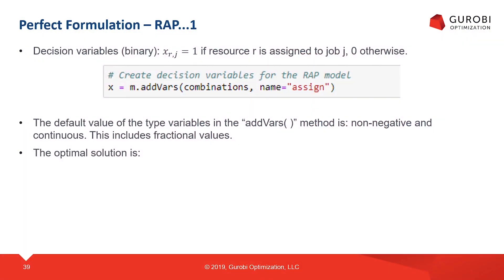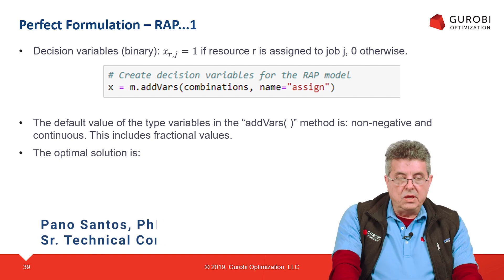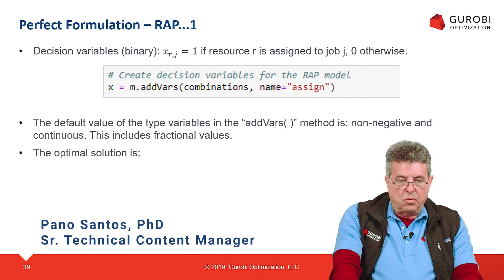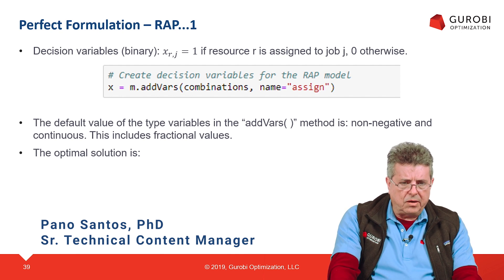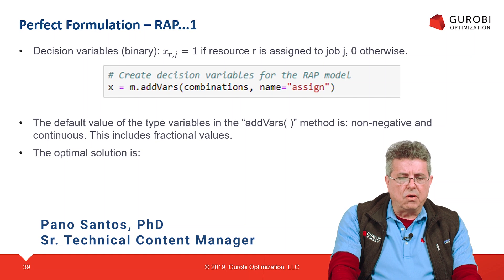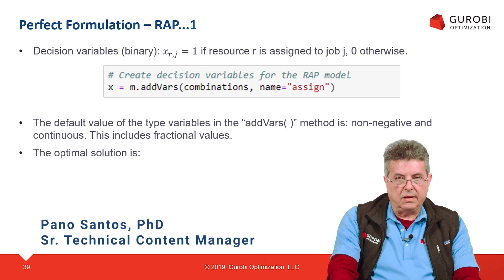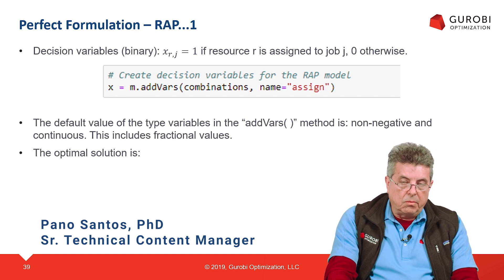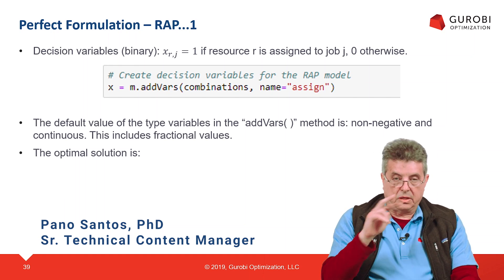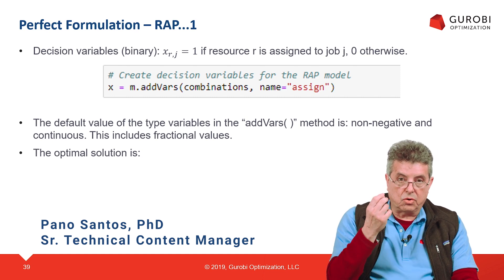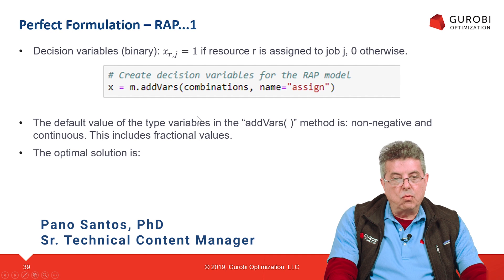Let's recall the RAP problem. When we define the decision variables of the RAP problem, we define the variable as a binary variable, because the variable of assigning resource R to job J is equal to one when we assign resource R to job J, and zero otherwise. This variable is called binary because it can only take a value of one or zero — just two values.